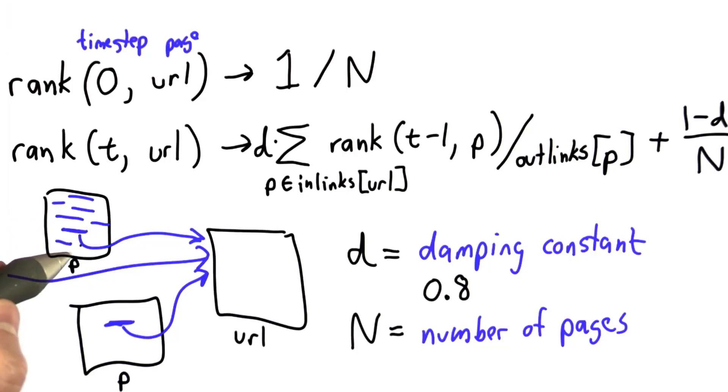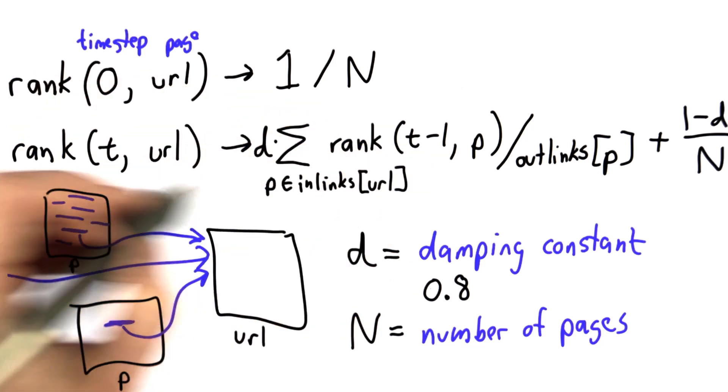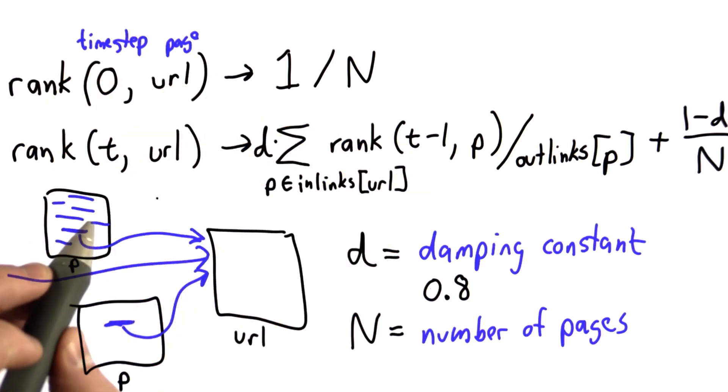So our goal is to write code now that computes the formula that we worked out earlier, that we want to compute the rank for each page. The thing that we're going to do instead of using this recursive definition, we're going to write a loop that goes through the time steps, and we're going to figure out how many time steps we want.